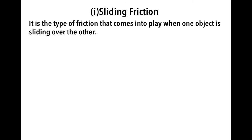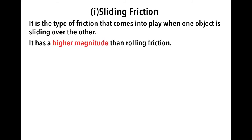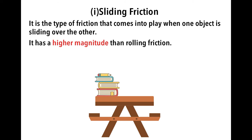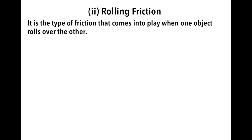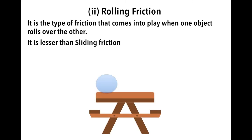Sliding friction is the type of friction that comes into play when one object is sliding over the other. It has a higher magnitude than rolling friction. Here, the books are sliding over the table. Rolling friction is the type of friction that comes into play when one object rolls over the other. It is lesser than sliding friction. Suppose we have a ball on the table — it will roll, and hence rolling friction will be acting on it.